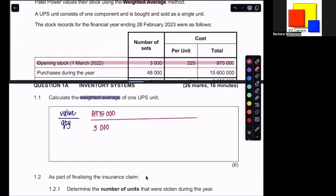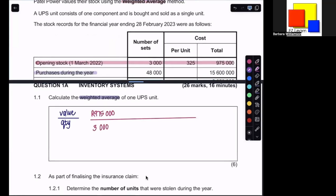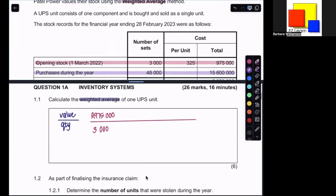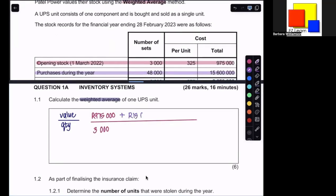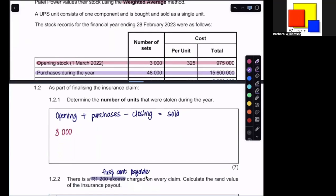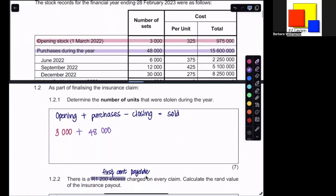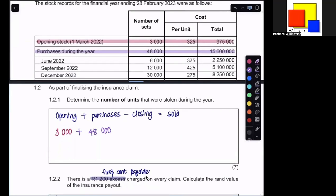We can then see what our purchases for the year were. So we bought 48,000 units at a variety of prices, but we can see the total amount there. So we can again put the value at the top, 15,600,000 over the 48,000. I can also use it in part of my calculation of the number of units by simply saying, plus my purchases of 48,000 units. They do give me all the individual amounts, but when I'm using weighted average, I actually don't need those. I just need to know what the total amount was. If we were using FIFO, then I would need the individuals.